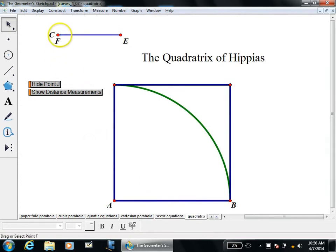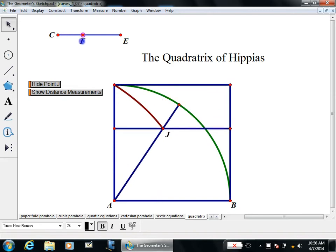The next curve I want to show you is the quadratrix. The quadratrix is defined by two lines: there's a line going down this horizontal line and there's another line rotating like the second hand of a clock. They're both going at a constant speed in such a way that they hit the bottom at the same moment.